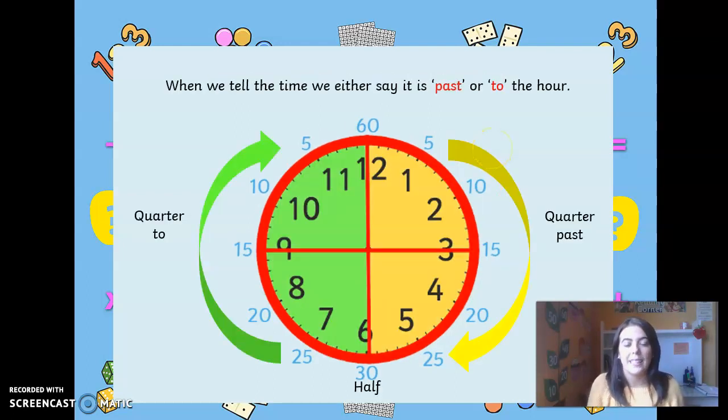When we tell the time, we either say it is past or to the hour. So everything that is from five, ten, fifteen, twenty, twenty-five, we always say it is quarter or past the hour.